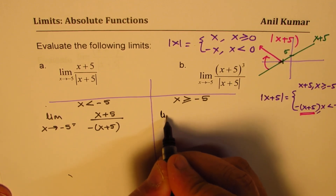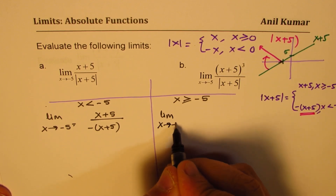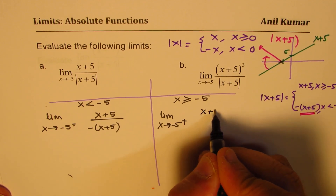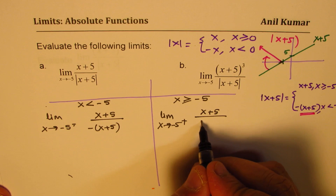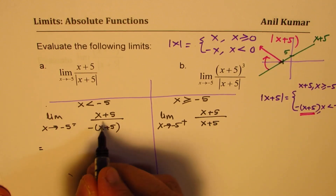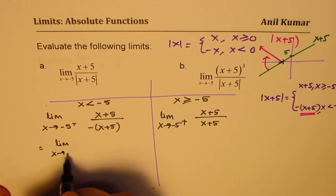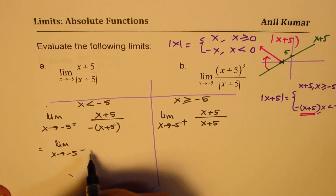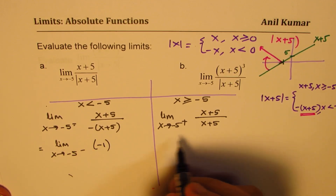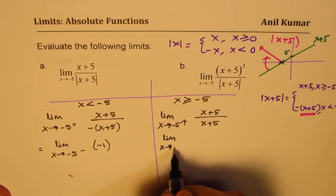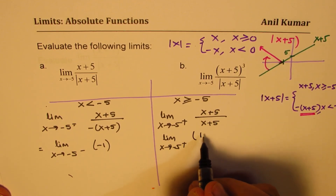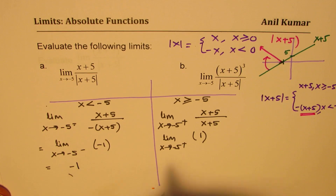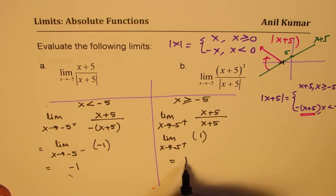On the right side of minus 5, we write the limit as x approaches minus 5 from the right. In that case the denominator is positive (x+5). So on the left we get (x+5) over negative (x+5), which simplifies to minus 1. On the right we get just 1.